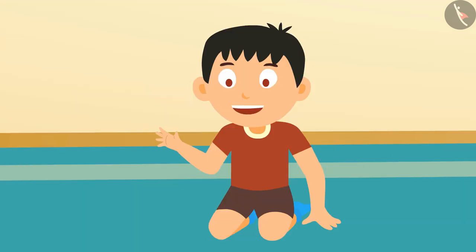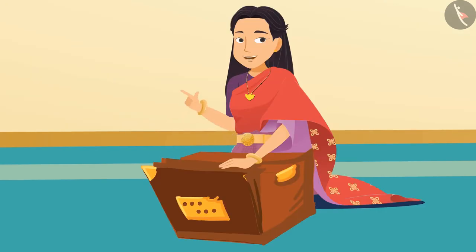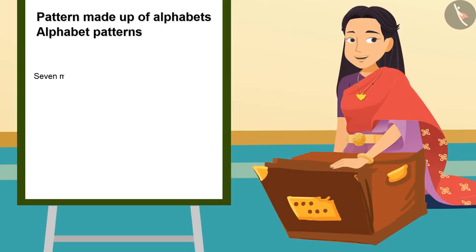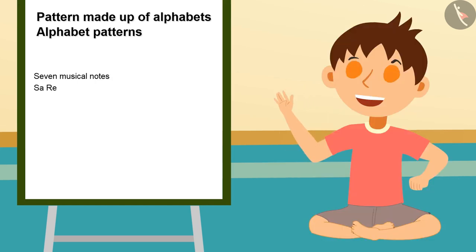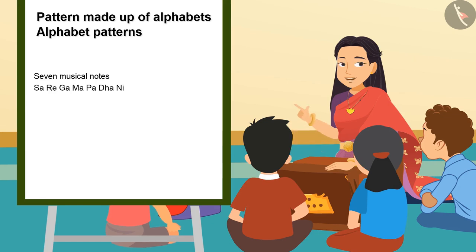Writing all names alphabetically is a kind of pattern, so we can say this is a pattern made of alphabets. Ma'am, are there any more examples of alphabetical patterns? Yes, of course! You all know about the seven musical notes, right? Sa, Re, Ga, Ma, Pa, Dha, Ni — these musical notes are also made up of alphabets. Come, let's make some patterns using musical notes today!